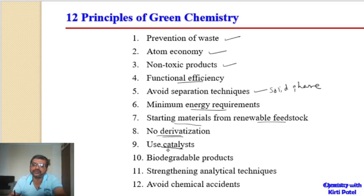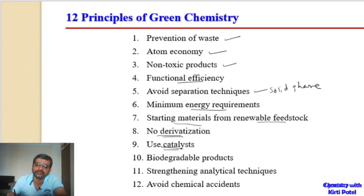The ninth principle says the use of catalysts is desirable over stoichiometric reagents. Catalysts should be used wherever possible, as that will also be good for the environment.